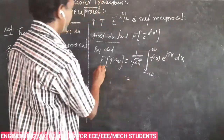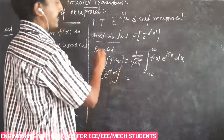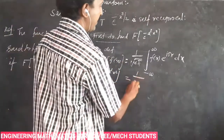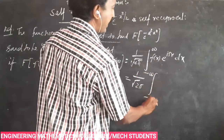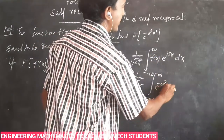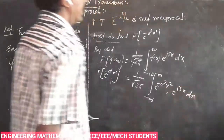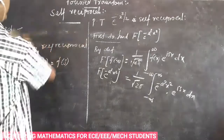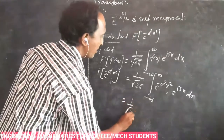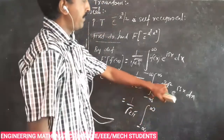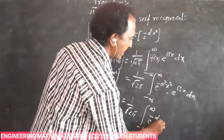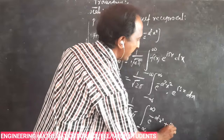That is, Fourier transform of e power minus a squared x squared is equal to 1 by root of 2 pi, integral from minus infinity to plus infinity, of e power minus a squared x squared times e power i s x dx. Using the law a power m times a power n equals a power m plus n, that becomes e power minus a squared x squared plus i s x dx.